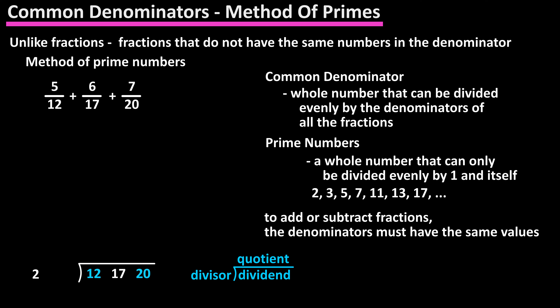Both 12 and 20 are evenly divisible by 2, so we will put 2 as the divisor, and put those quotients above the given dividends as you see here. 12 divided by 2 is 6, and 20 divided by 2 is 10. Since 17 is not evenly divisible by 2, we will just bring that number up.